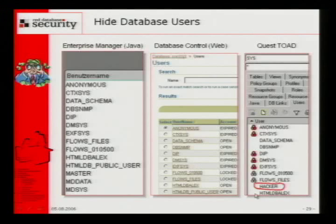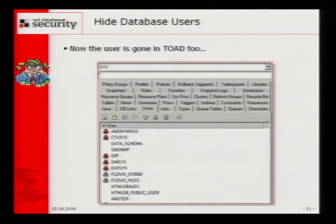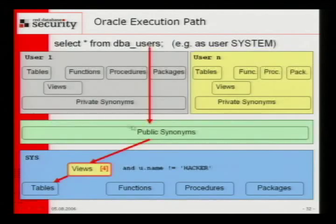Only in Toad is the user still visible. But Toad is just using a different view — ALL_USERS. So if you modify the view ALL_USERS and add 'and username not equal hacker,' the user is also gone in Toad. In most cases, if you don't see something it's invisible. You can still look up in the table sys.user$, but most DBAs look in the DBA_USERS view. You should never trust views for critical objects. We modified the view in the sys object, but we could also create a private synonym pointing to a different object — there are endless possibilities.